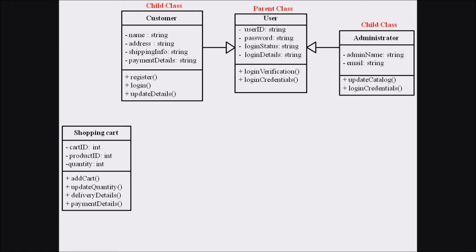Now we are dealing with the fourth class, Shopping Cart. The Shopping Cart has attributes like cart ID, product ID, and quantity, and methods like add to cart, update quantity, delivery details, and payment details. There is a composition relationship between the Customer and the Shopping Cart — the customer is composed of the shopping cart. The multiplicity is: one customer may have zero to many shopping carts, represented by placing '1' beside the Customer class and '0..*' beside the Shopping Cart.